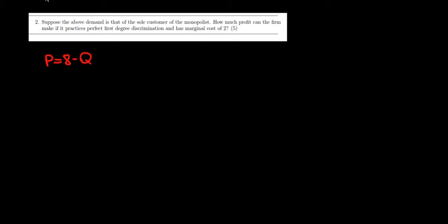Let's have a look at question two. Suppose that the demand is the demand of the sole customer, the only customer of the monopolist. How much profit can the firm make if it's going to do perfect first degree price discrimination and the marginal cost is equal to two? Let's recall this is the demand function.